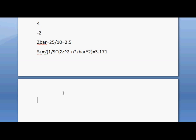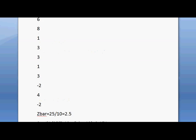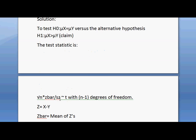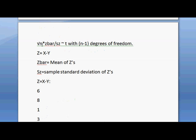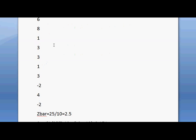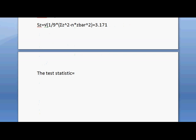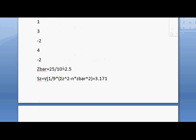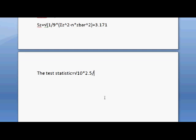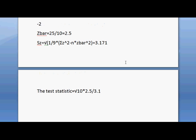Now find the value of the test statistic. The test statistic, as we have stated before, is √n × Z̄ / Sz. So put the value of n, the value of Z̄, and Sz: √10 × 2.5 / 3.171, which will give you 2.493.